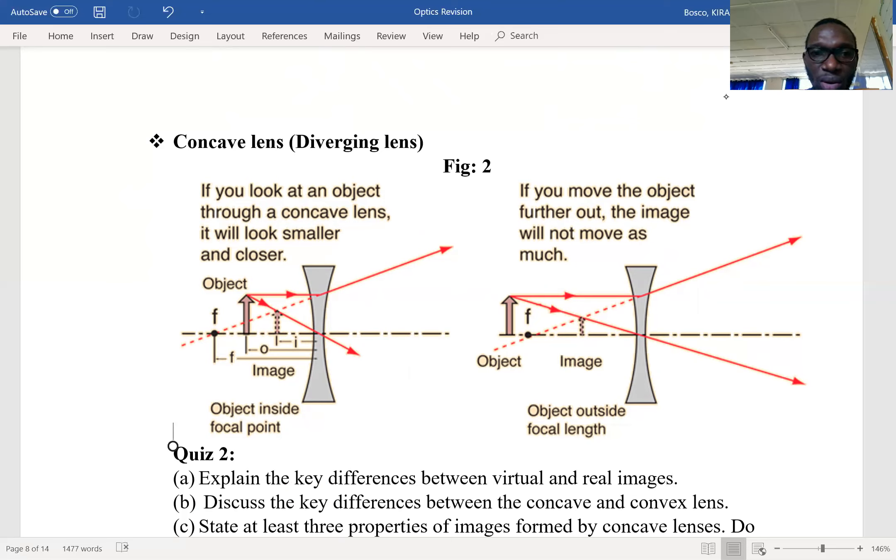Look at the first one. The object is here and it is big. We draw a ray of light parallel to the principal axis, and it is diverged away but appears to be coming from the focal point. We draw another ray from the top that goes through the optical center, undeviated. Where the two rays meet, you have the image here.